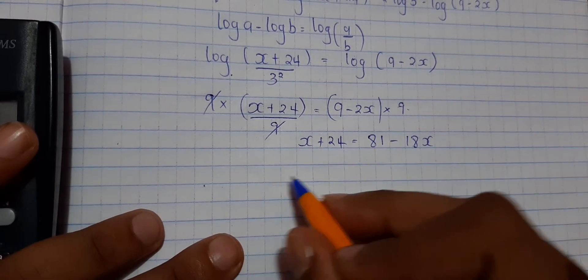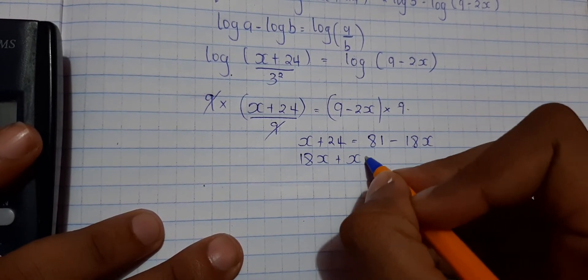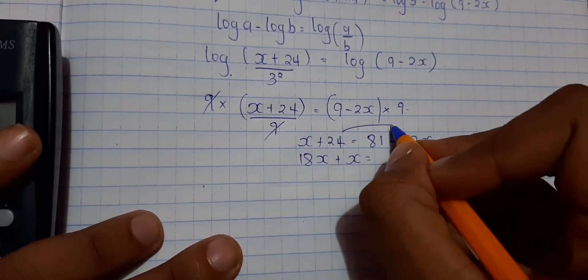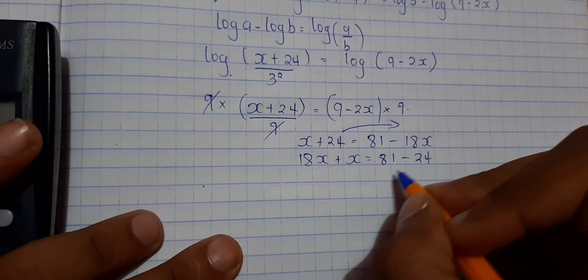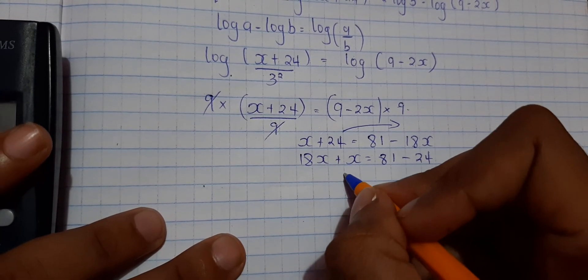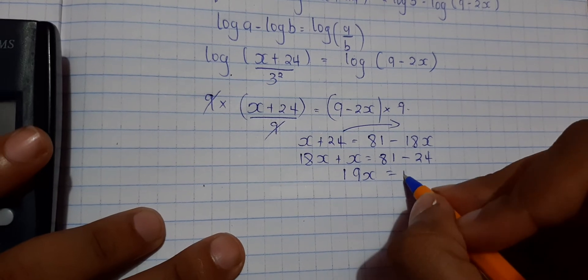So we move this to the positive side: 18x plus x. We move this to the negative side: 81 minus 24. 18 plus 1 is equals to 19x is equals to 81 minus 24, which is 57.